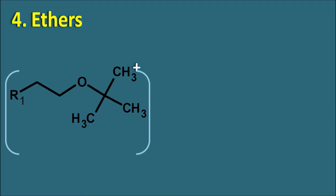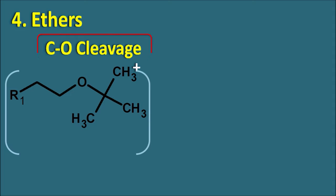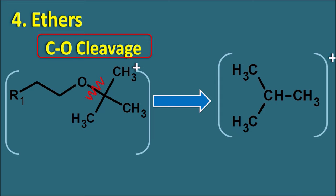Ethers can also undergo CO cleavage — that is, cleavage between the carbon and oxygen. If one of the alkyl groups attached to the oxygen is bulky, they can form a tertiary butyl carbocation, which is highly stable. The m/z value: three CH3 groups each with mass 15 gives 45; plus one CH (12+1=13) gives 58. So m/z 58 indicates formation of a tertiary butyl group, giving a very strong peak because this ion is highly stable.